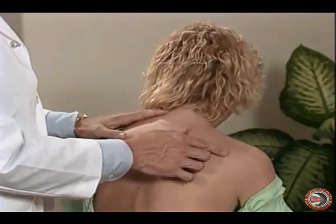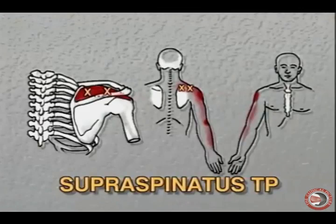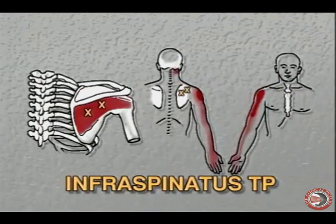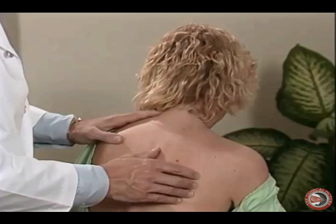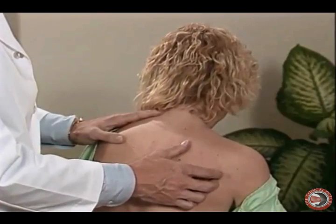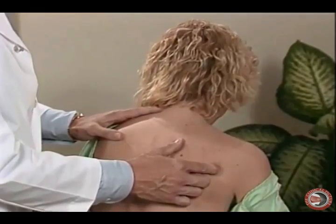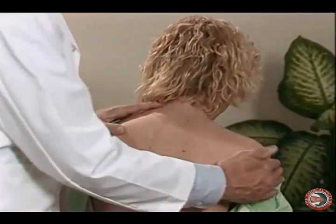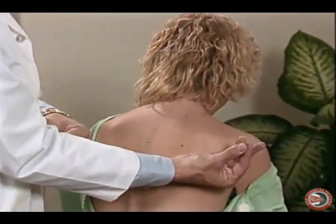Another common muscle is one of the rotator cuff muscles — the supraspinatus, which is palpated by going just above the spine of the scapula and evaluating across the muscle for a trigger point. A trigger point in the supraspinatus will refer pain to the lateral shoulder. Below the spine of the scapula is the infraspinatus. There are generally two areas of trigger points in the infraspinatus: the first is along the border of the scapula, and the second is in the belly of the muscle.